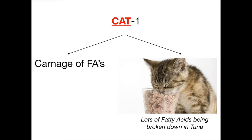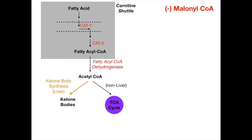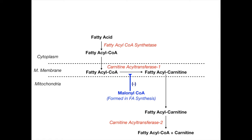The inhibitor of beta-oxidation is malonyl-CoA. Malonyl-CoA inhibited CAT-1 and prevented the conversion of fatty acyl-CoA to fatty acyl-carnitine. Malonyl-CoA is formed in fatty acid synthesis, so when you're synthesizing fatty acids, malonyl-CoA inhibits fatty acid breakdown — an extremely high-yield point.